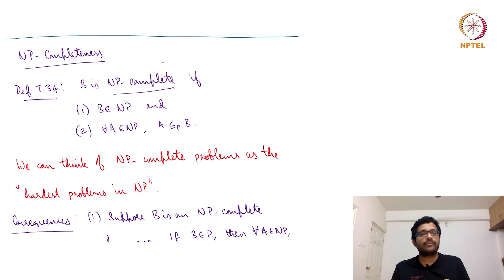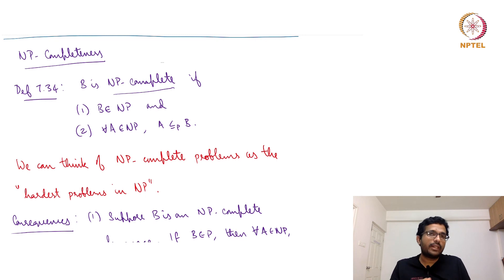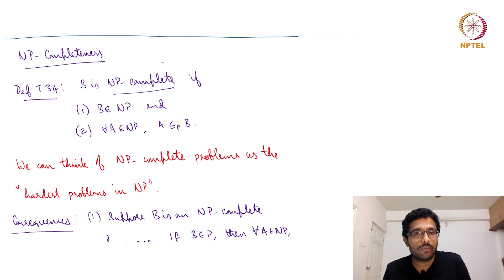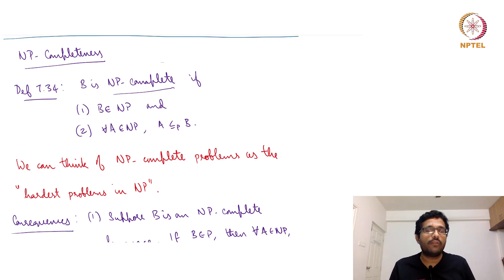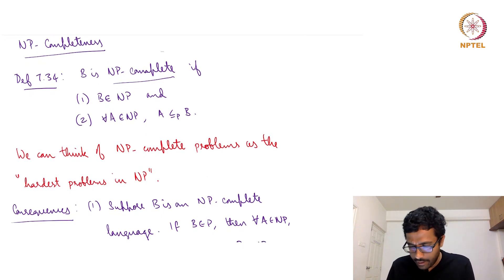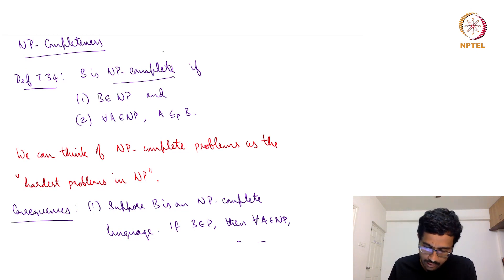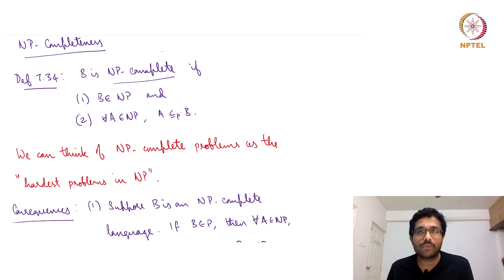One reason is that you can think of these problems as the hardest problems in NP. We know that NP contains P, and these are probably the more easily solvable problems. However, NP-complete problems are those for which we do not know of a polynomial time algorithm yet. In a moment we will see why I call them the hardest problems in NP — if we solve these problems, we will have solutions for all the problems in NP.